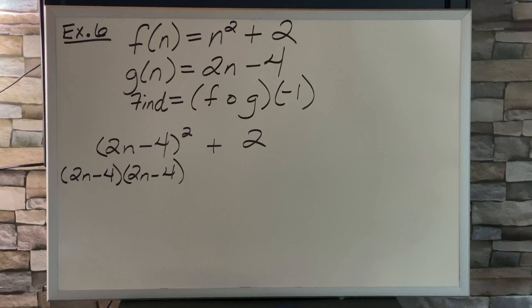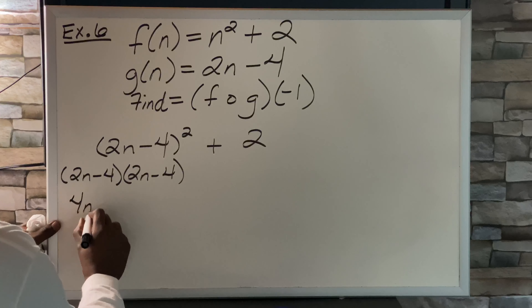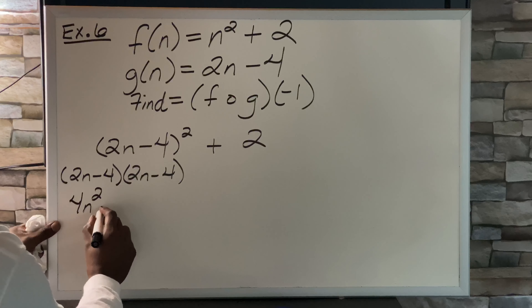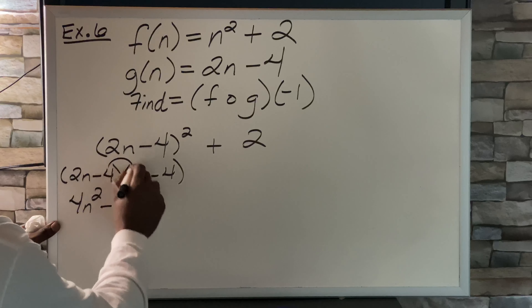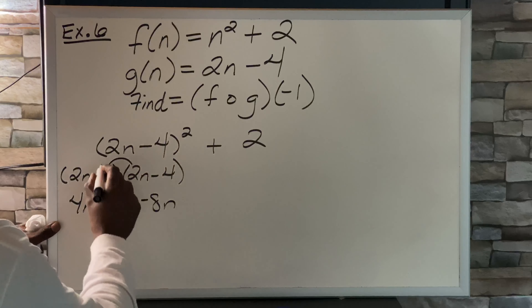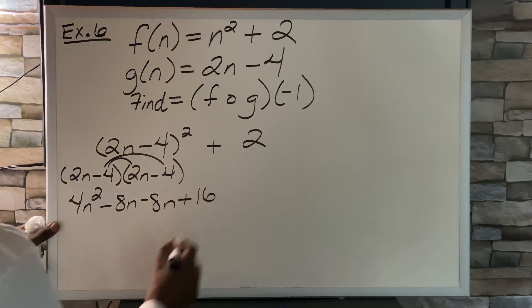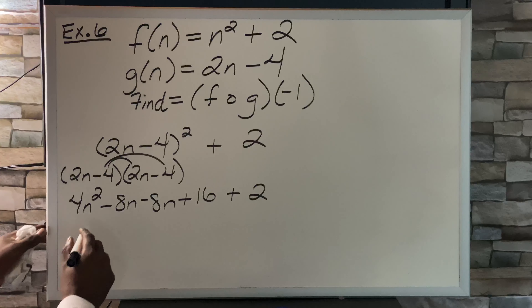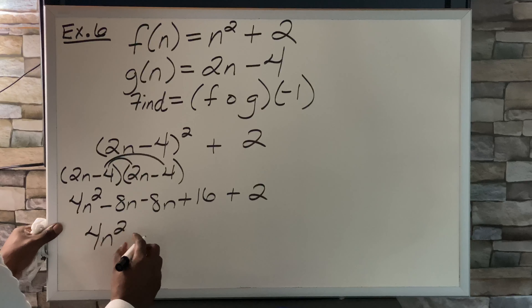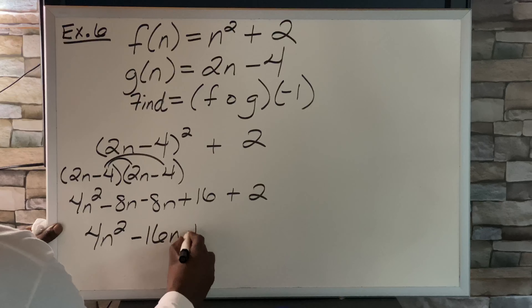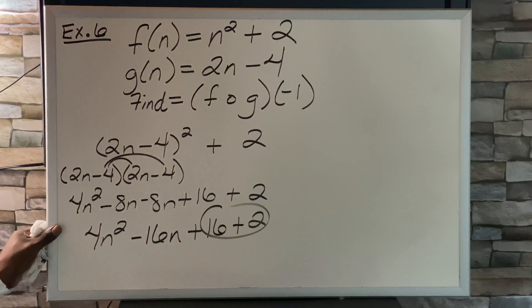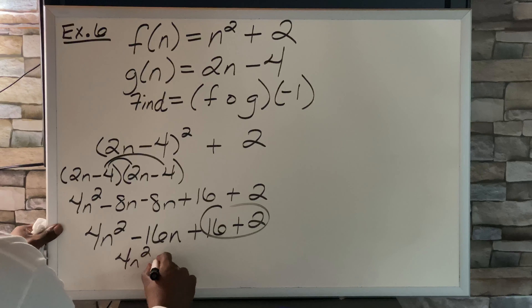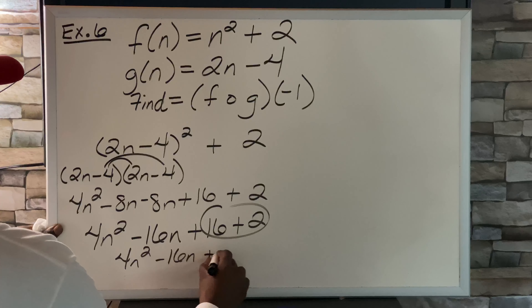Using the FOIL method — first, outer, inner, last: first is 4n squared; outer is negative 8n; inner is negative 8n; last is plus 16. The two middle terms combine to give 4n squared minus 16n plus 16, plus 2. Those constants combine to give 4n squared minus 16n plus 18.